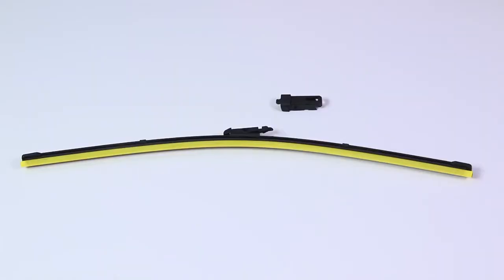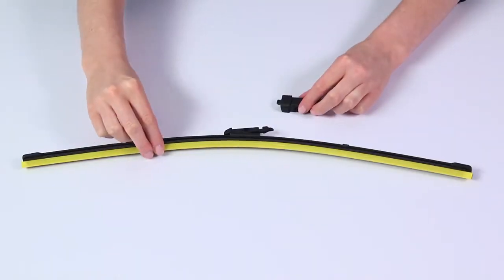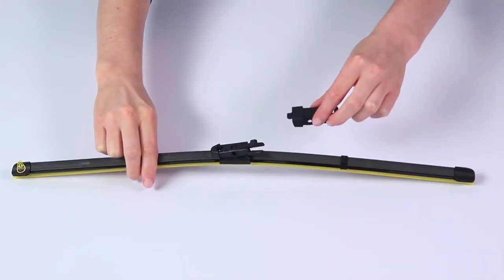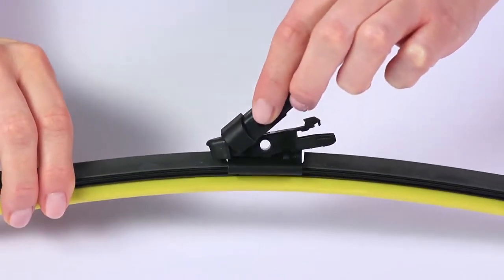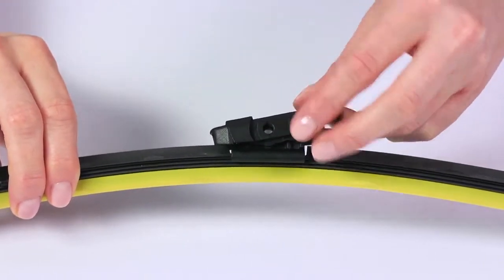First, remove the supplied adapter from the package. Next, insert the curved tab of the adapter into the square opening of the connector. Push down on the back of the adapter until it clicks into place.